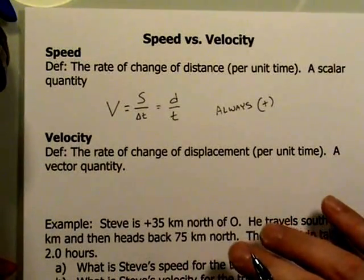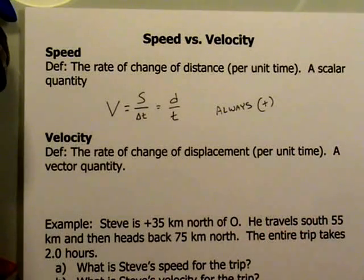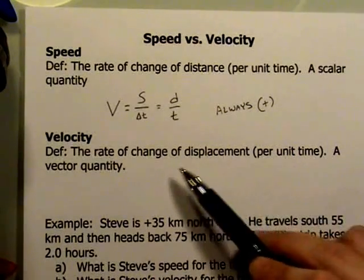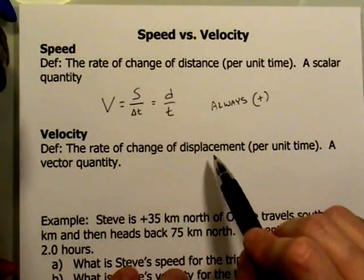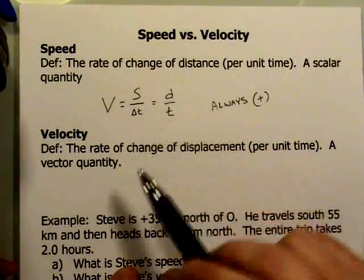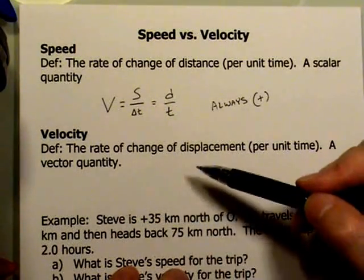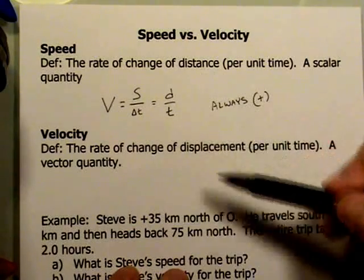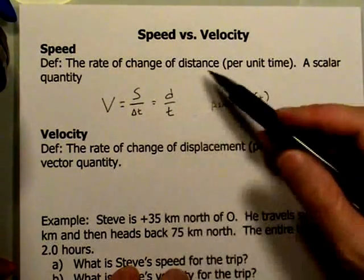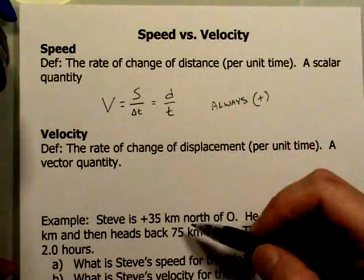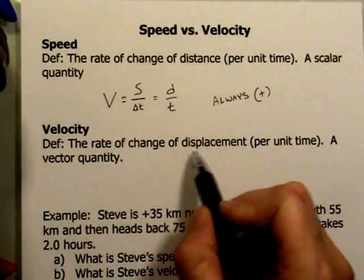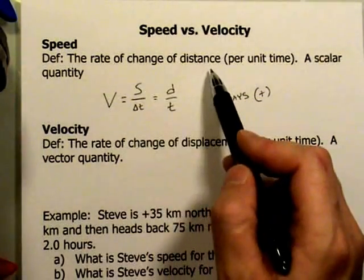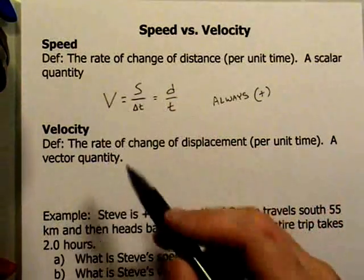Now velocity has a very similar definition. It's also a rate of change per unit time. But in this case, it's the rate of change of displacement. And remember, displacement usually is not the same as the value of the distance. It's not impossible. They could be the same, the distance that you travel and the change in displacement. But really important to notice that it's the change of displacement. It's the change in distance. That's what speed and velocity are based on.